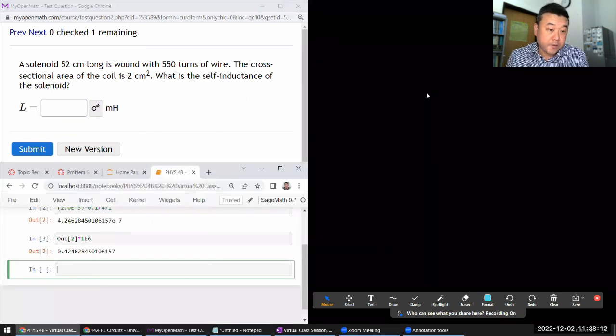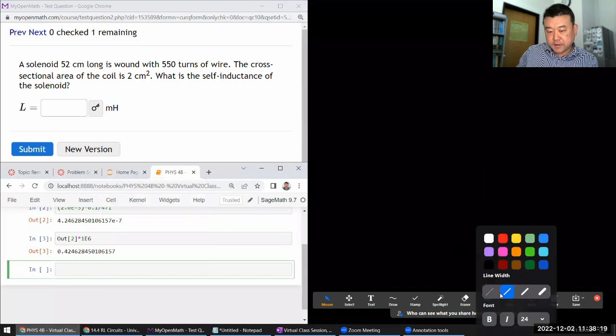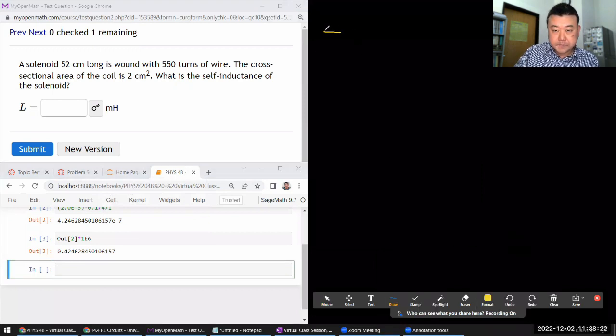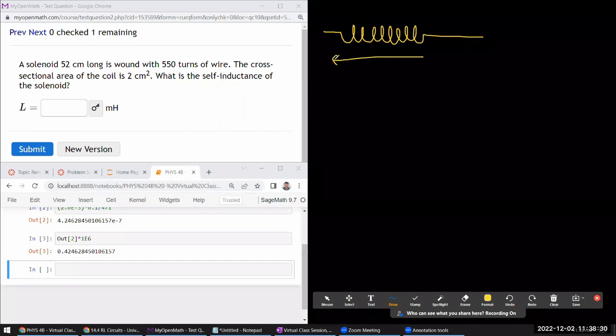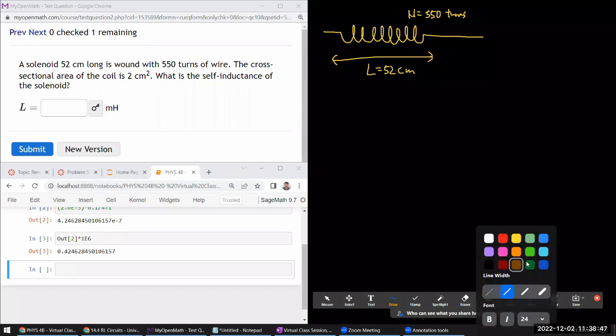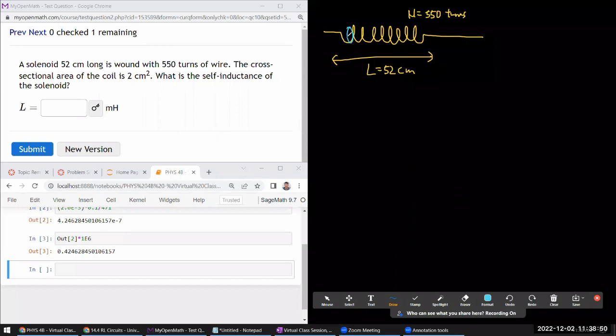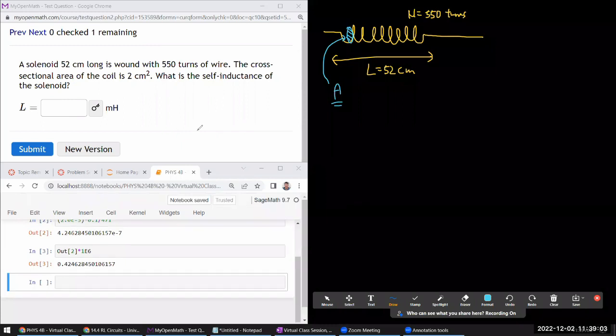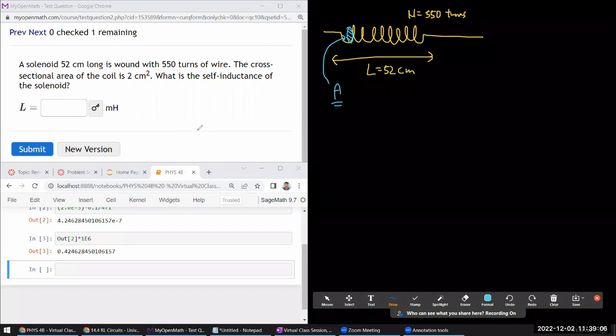Next question says a solenoid that is centimeters long, wound with some number of turns. I have a solenoid that's some length with some number of turns. The cross sectional area of the coil is two centimeters. What is the self-inductance of the solenoid? So this is one of those questions where you can look up the formula if you want, but let me show you how you can derive that formula quickly.